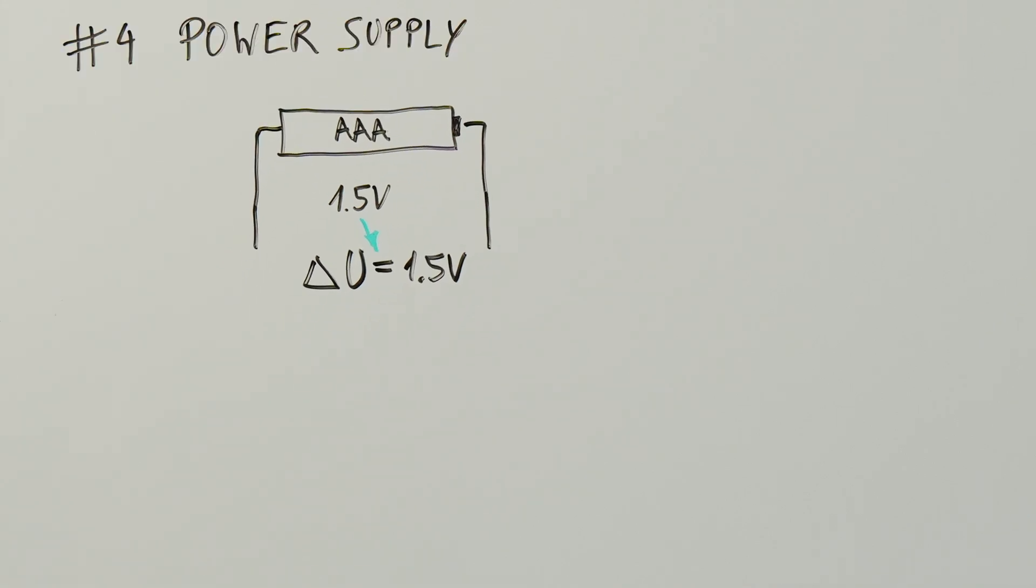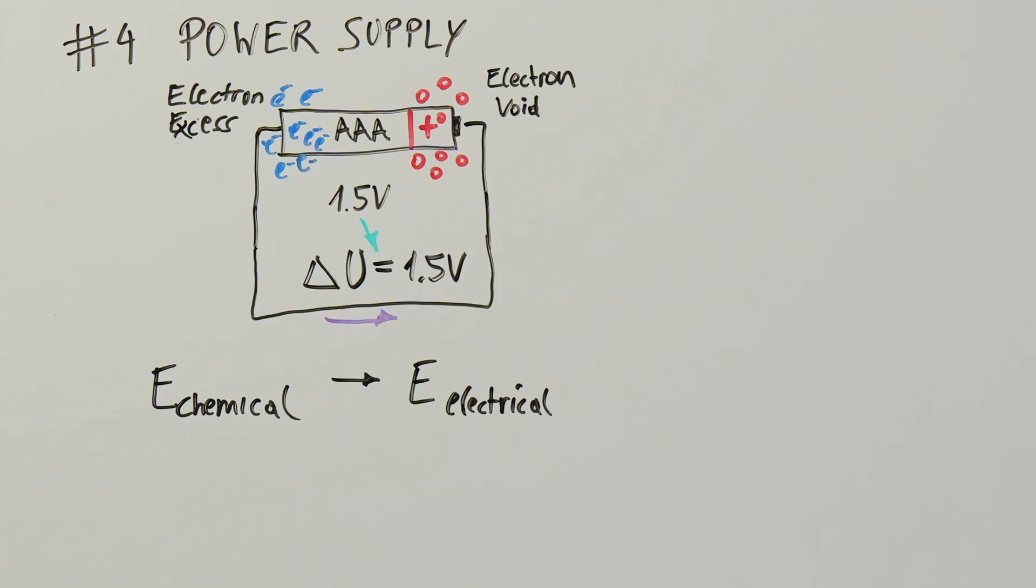For an electric circuit to function, we provide this pushing force or this difference in electric potential through a power supply. A battery creates this electric potential difference between its poles by converting chemical energy into electrical energy. The battery attains a state in which the minus pole acquires electron excess while the plus pole lacks electrons. This imbalance pushes the electrons from the minus pole to the plus pole if connected through a conductor.